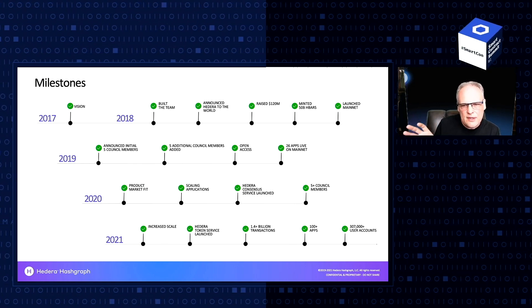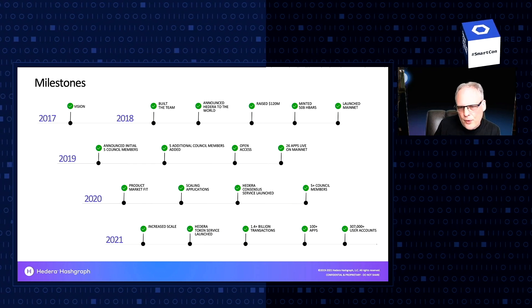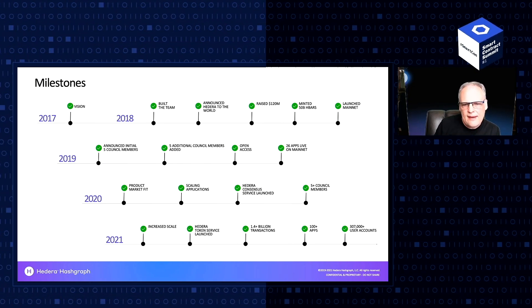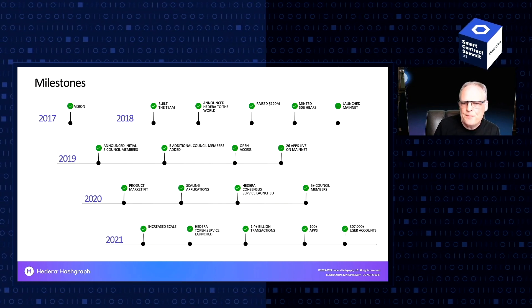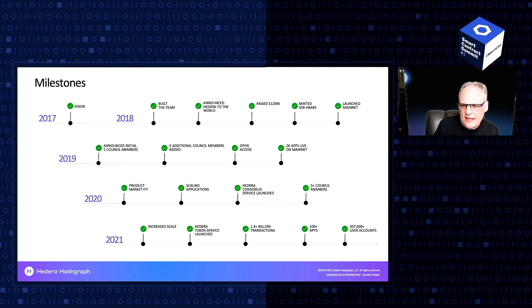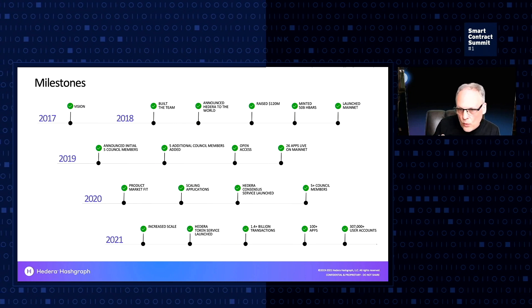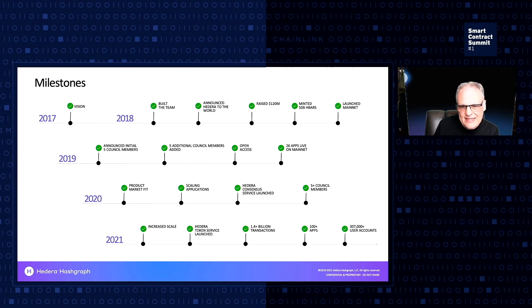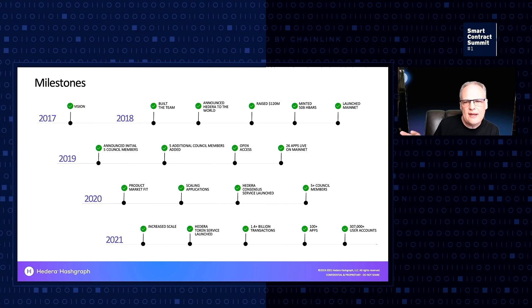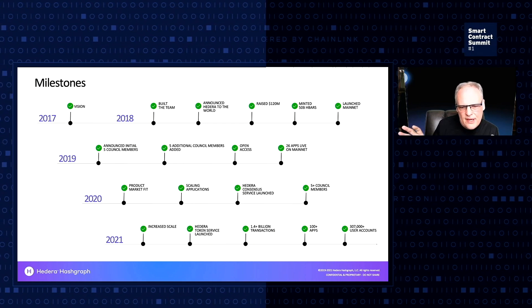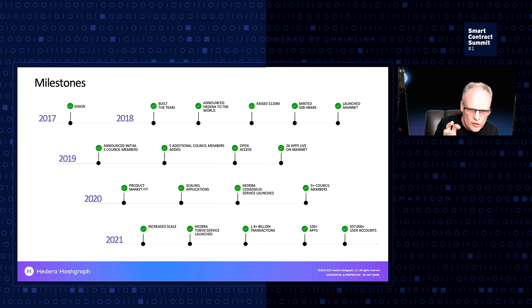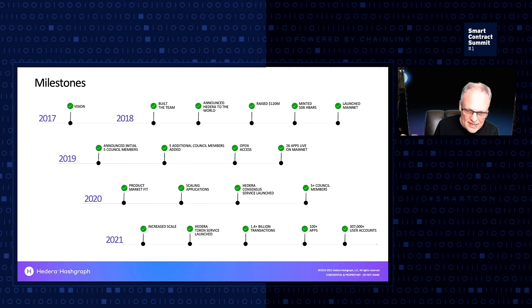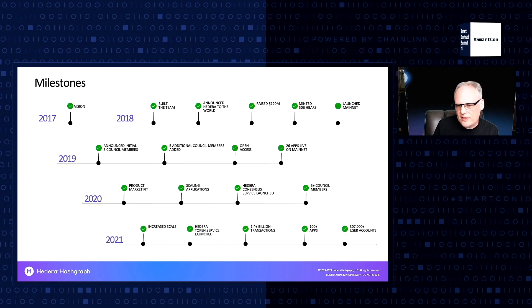We began to observe how the market was using the APIs. In 2020, through that experience with the ecosystem and network users, we decided to create a couple of additional services: the Hedera Consensus Service and a tokenization service. We continued adding council members through 2020. This year, we've seen fantastic growth in use of the network. The size of users has increased — we've always had good small and medium-sized businesses and startups, but enterprises are now beginning to go to market with their solutions.